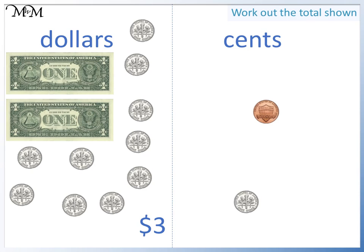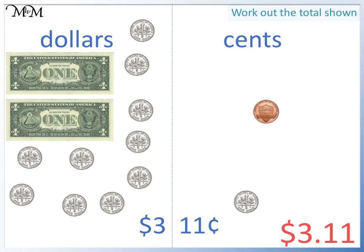Looking again at the cents, we have one dime, which is ten cents, plus one cent, making a total of eleven cents. So we have a total of three dollars and eleven cents, which we write as three dollars eleven.